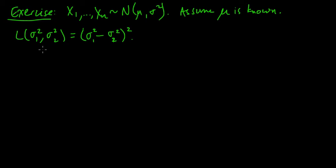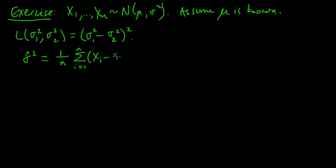Recall that we defined the unbiased sample variance and the biased sample variance. The biased one is (1/n) times the sum of (xᵢ minus the sample mean) squared, and the unbiased one uses 1 over n minus 1.